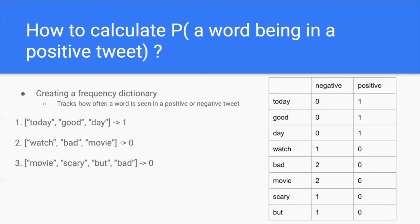So how do we calculate what is the probability of a word being in a positive or negative tweet? One way is using a frequency dictionary, where it counts how often a word is seen in a positive or negative tweet. For example, with three processed tweets: the first contains the keywords today, good, and day, and has positive sentiment.